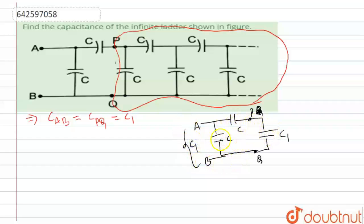So it's going to be C1. Now just see from this system. C and C1 is in series, and then again C is in parallel. So let us write this equation. So what will be the final diagram?